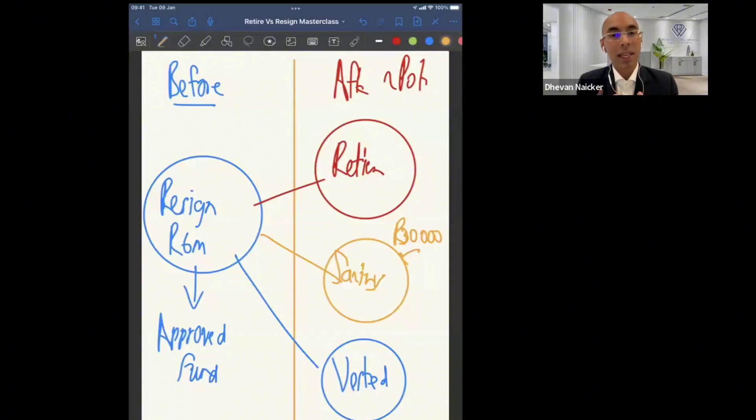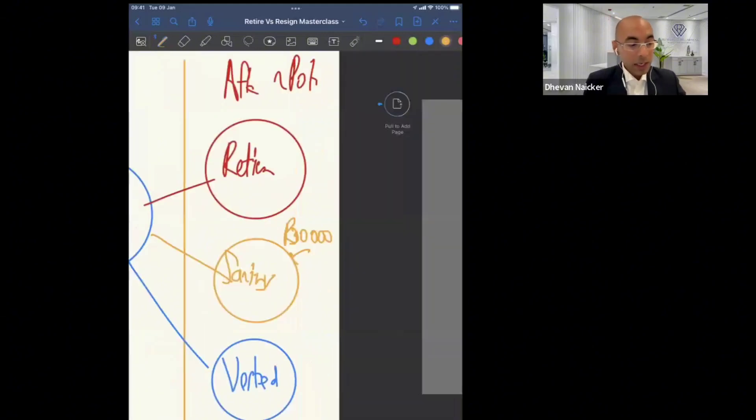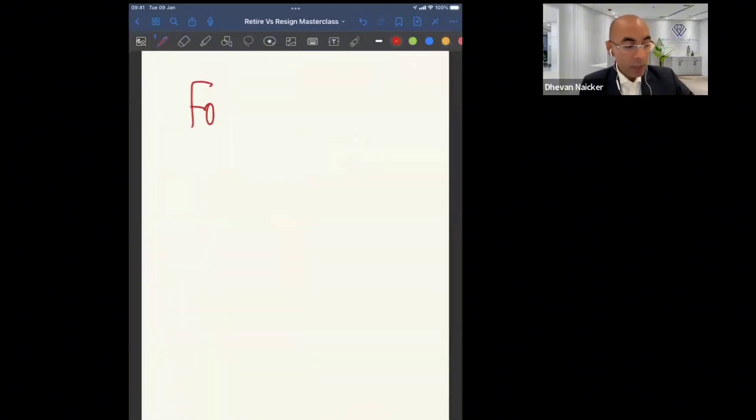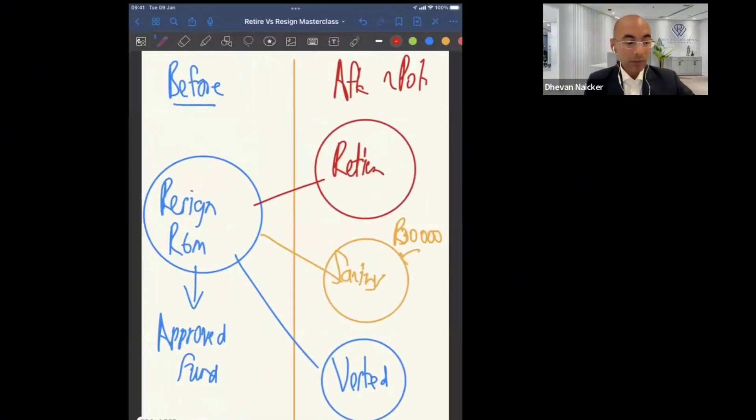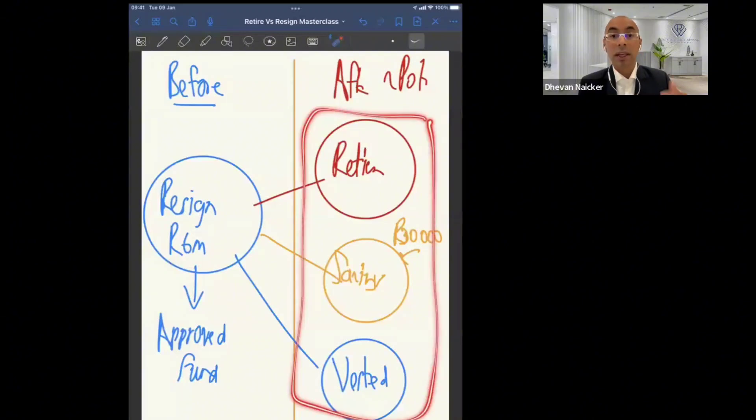However, when we start to have a look at what's taking place from GEPF, GEPF is a defined benefit fund, which means everything operates in set of formulas. So the first thing to focus on is GEPF would have to adjust their formula in order to create a savings pool. And then it means because of the adjustment of the formula, are your benefits going to be the same? Meaning, prior to two-part, let's assume you have R6 million that's sitting as your resignation value. Post two-part, are you still going to have R6 million in the resignation value?